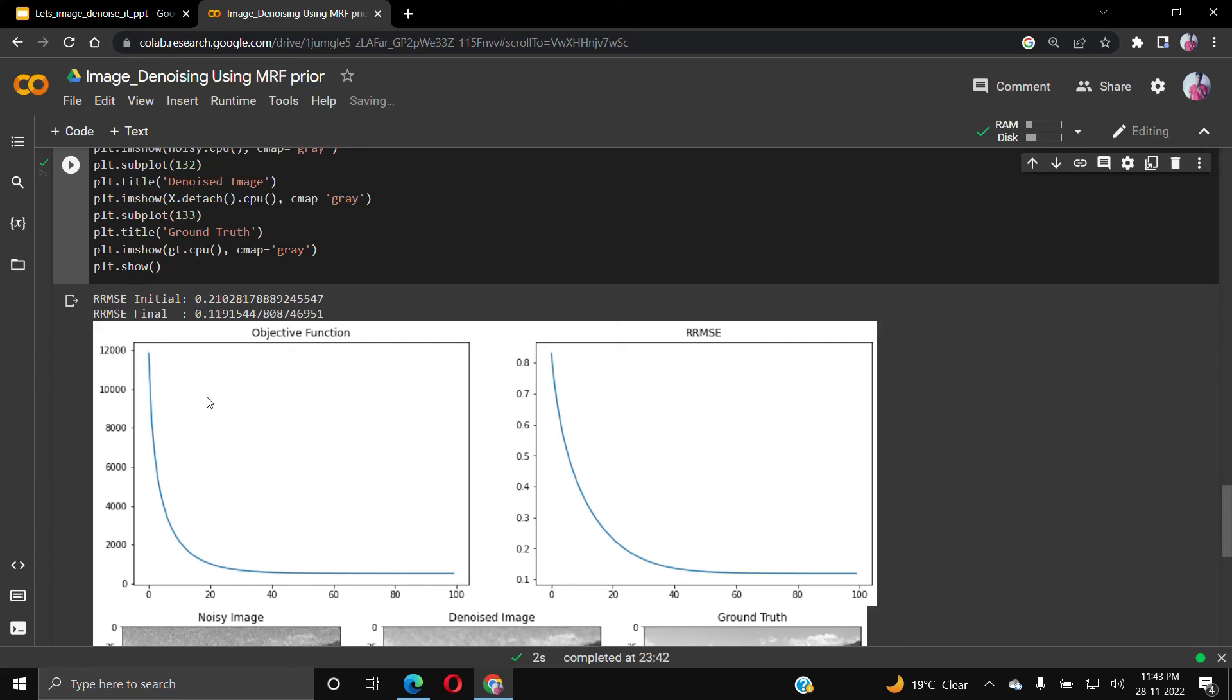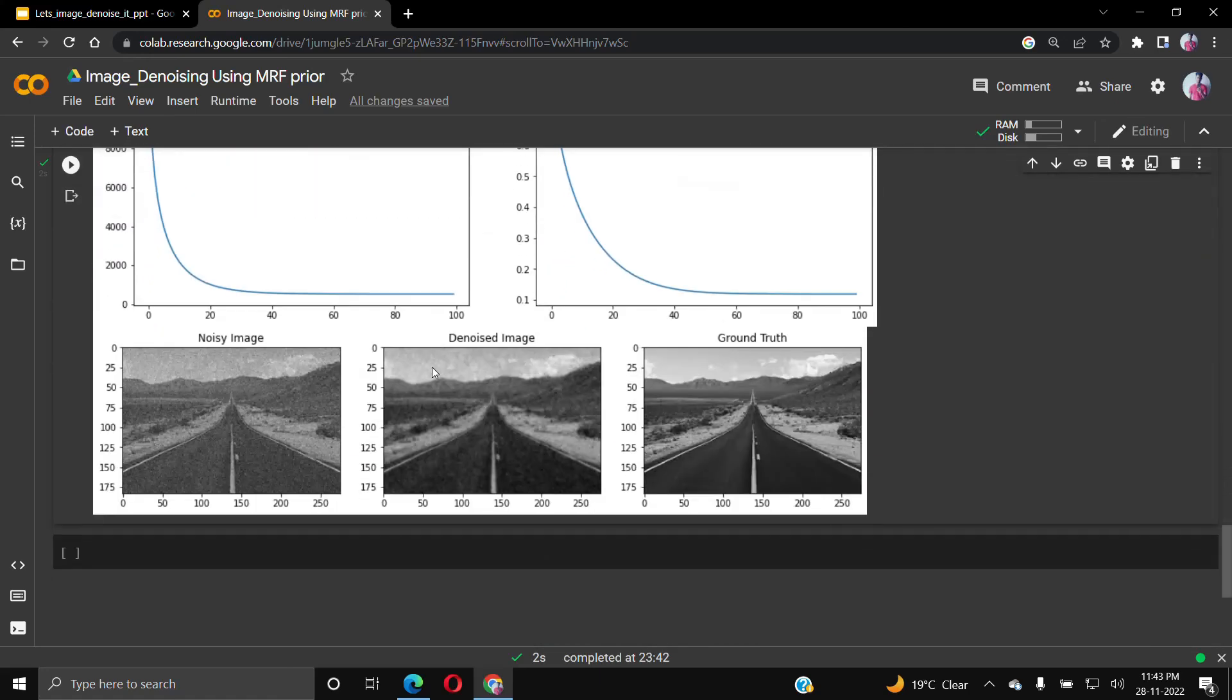After a number of iterations, we train and at the final we get the denoised image with RRMSE value as 0.11. Here we can see the noisy image, the denoised image, and the ground truth image.